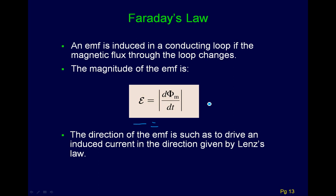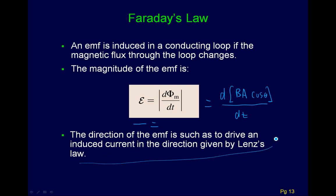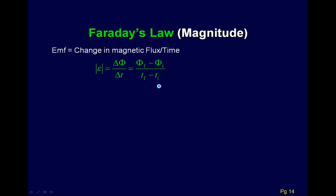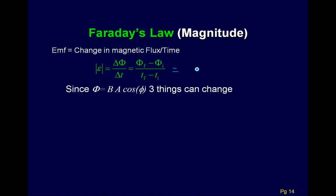We generally take the absolute value so we don't worry about the sign. The magnetic flux is B times the area times cosine of the angle between them — and we take the derivative of this with respect to time. Sometimes it's easier to use deltas instead of derivatives, writing it as the difference in fluxes — B·A·cosθ final minus B·A·cosθ initial — divided by the change in time.